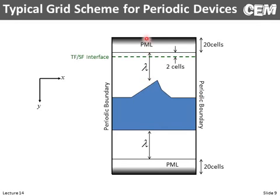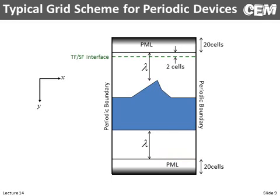We also want a PML at the top and the bottom to absorb outgoing waves. We want some space between the device and the PML because we don't want evanescent fields — for example, if it's a Guided Mode Resonance Filter, its evanescent field sticks outside and decays, and we don't want that to touch the PML. We'll have a total field scatter field interface to launch a one-way source toward the device, with a little space between the PML and the source injection point for recording reflected fields, and we'll record transmitted fields near the bottom.